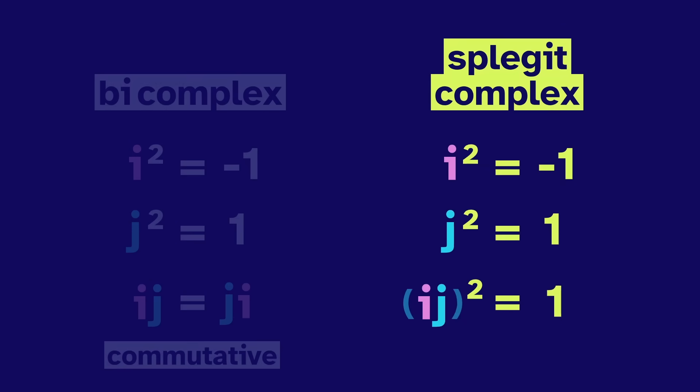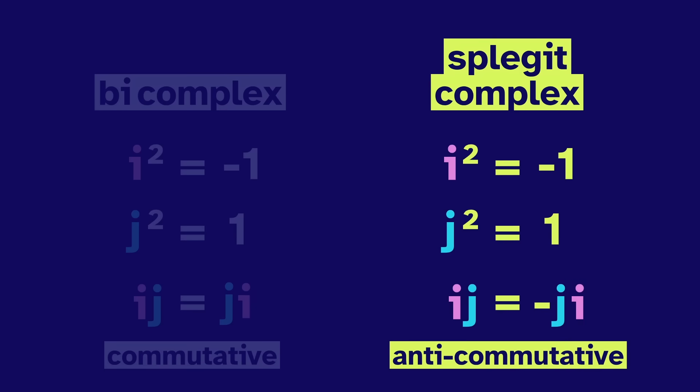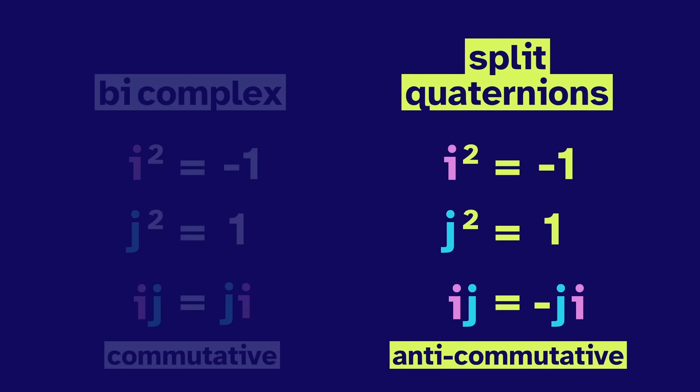In the positive one case, we do a little ouch, and find that they're anti-commutative. They prefer to work differently than the bi-complex. These are called the split quaternions.